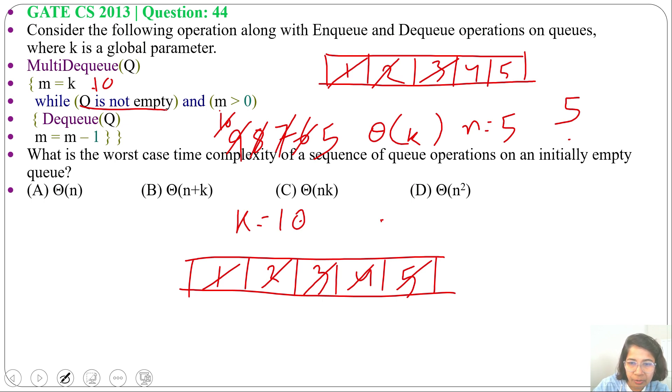So in this case, we run theta of N time. How many elements will be enqueued? When K value is greater than N, we are running theta of N time. When K value is less than N, multi-dequeue runs theta of K time. So in worst case, multi-dequeue runs theta of N time.